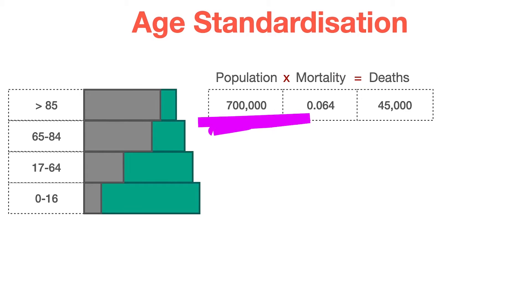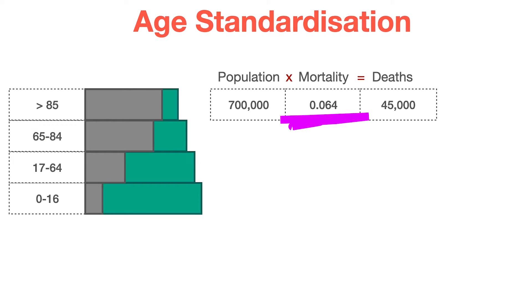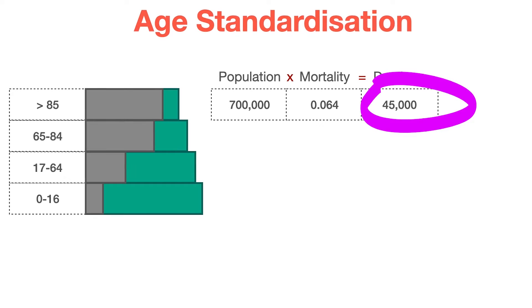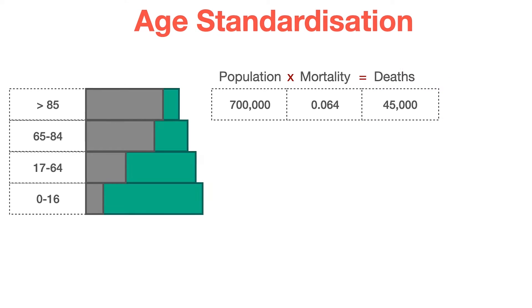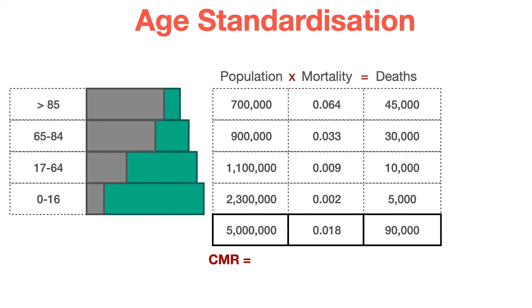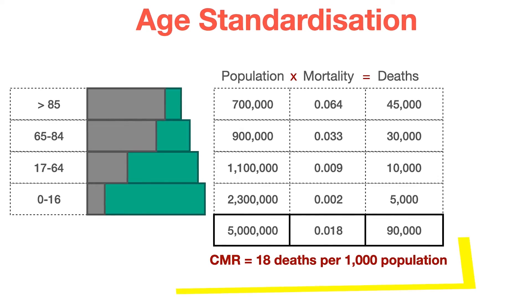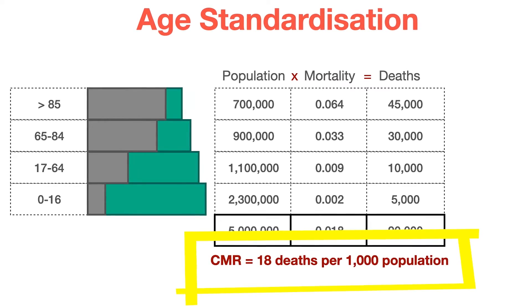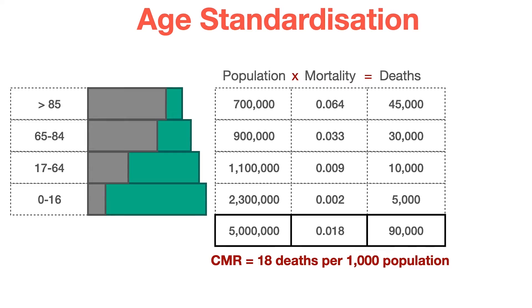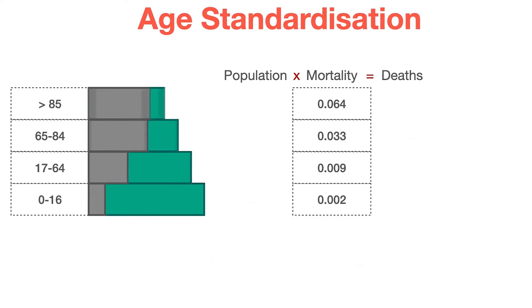So 700,000 people over the age of 85, times the proportion that die in that age group — 0.064 — gives you 45,000 deaths in that age group. We can do that for all of the age bands. In this example, we've got a crude mortality rate of 18 deaths per 1,000 population.